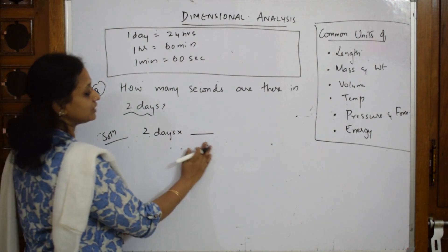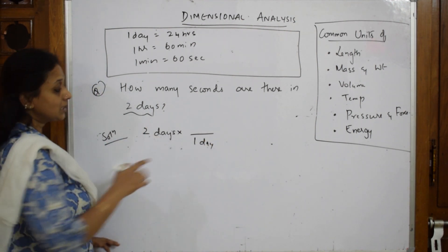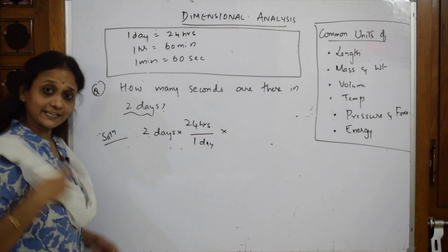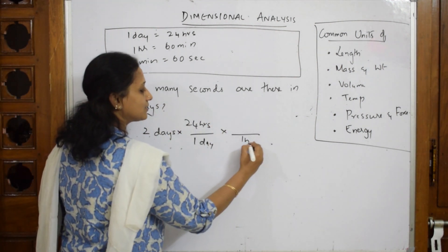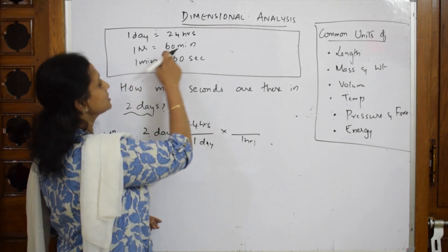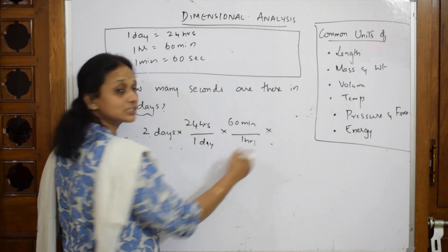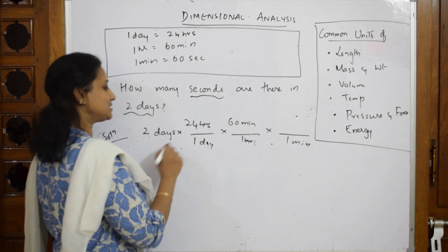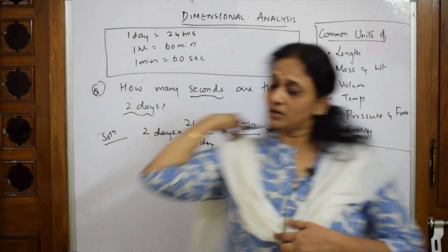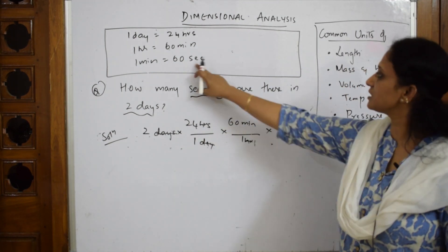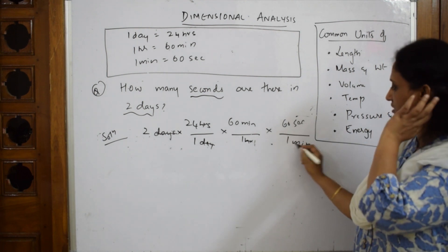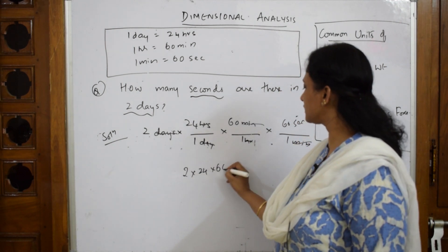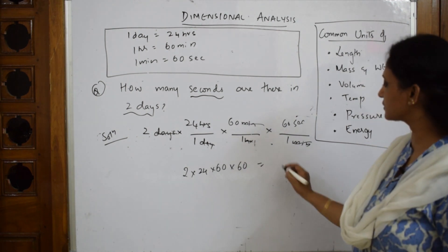Take 2 days, divide by 1 day so the days cancel. 1 day = 24 hours. Still not in seconds, so divide by 1 hour - hours cancel. 1 hour = 60 minutes. Still not complete, so divide by 1 minute - minutes cancel. 1 minute = 60 seconds, so the minutes cancel.